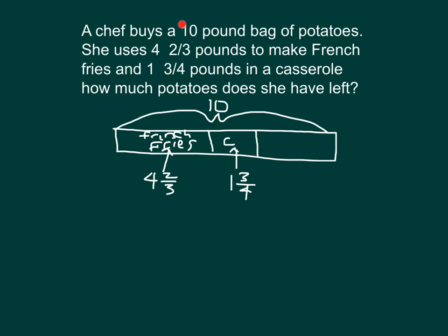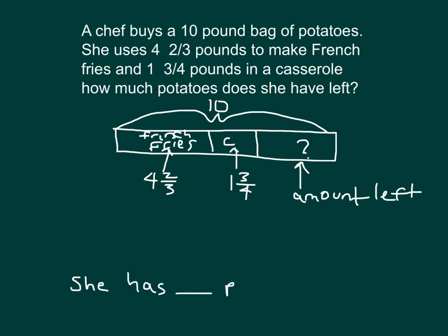So we have now used the ten pounds, the four and two-thirds pounds, and the one and three-quarters pounds. What's remaining in our bar model is the amount of potatoes that she would have left — that is what we are solving for, the amount left after she uses a certain amount. Let's write our focused answer: she has blank pounds of potatoes left.